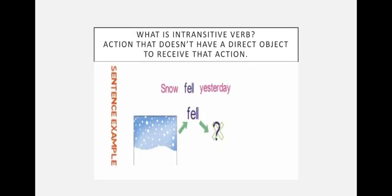Let us continue with the intransitive verb. First of all, what is an intransitive verb? It is an action that doesn't have a direct object to receive the action. When there is no person or thing to receive the action — remember, the object has to be a person or thing, which means a noun — then we call it an intransitive verb.